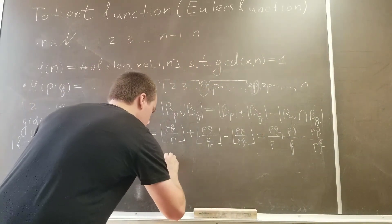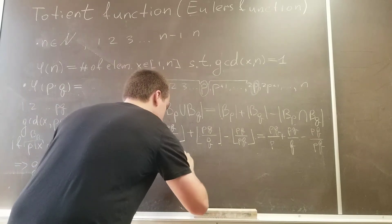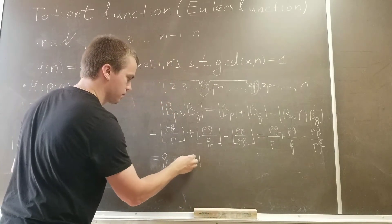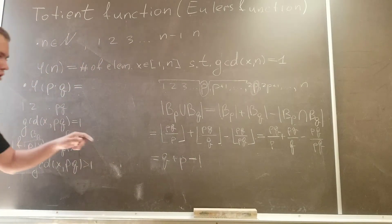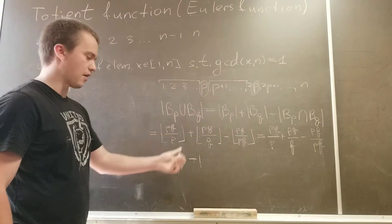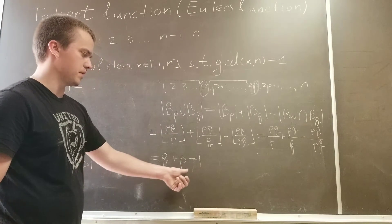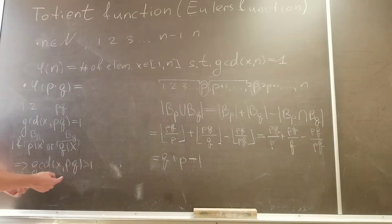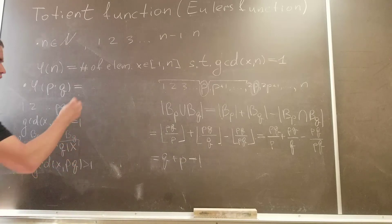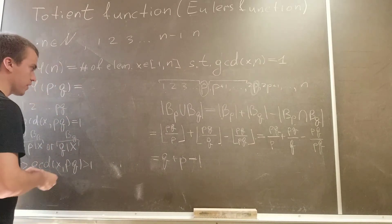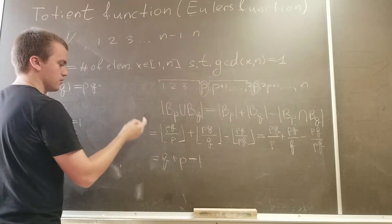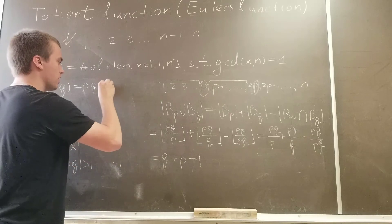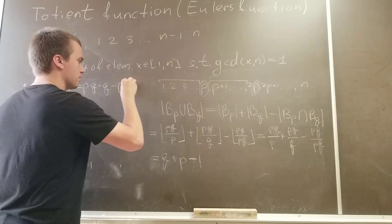This gives us q + p − 1. So the number of elements on the interval from 1 to p times q that are divisible by p or divisible by q is exactly q + p − 1. This means for these numbers gcd is bigger than 1. To find how many numbers have gcd equal to 1, we take the total number of elements p times q and subtract q + p − 1, giving us p·q − q − p + 1.